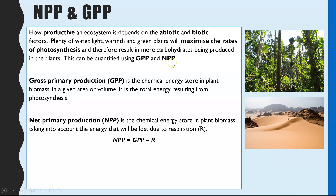In comparison, NPP is the GPP but takes into account the energy lost in respiration. So it's the total amount of energy from photosynthesis minus the energy lost in respiration. Net primary productivity is the chemical energy left over to create new biomass in the plant — that is really what we're interested in, as it represents the energy available to create biomass.